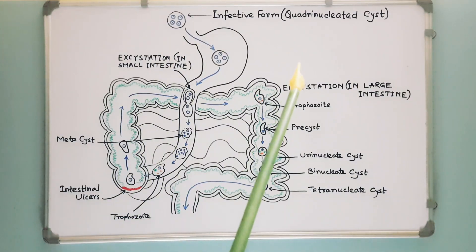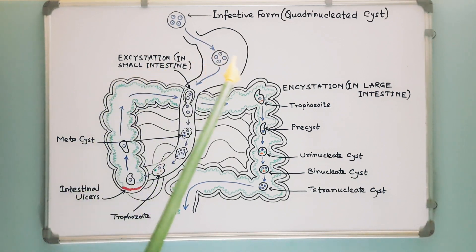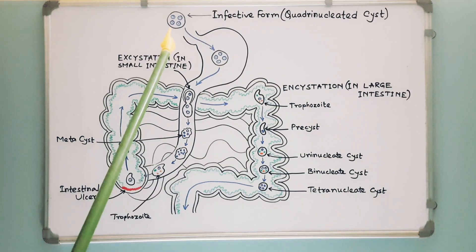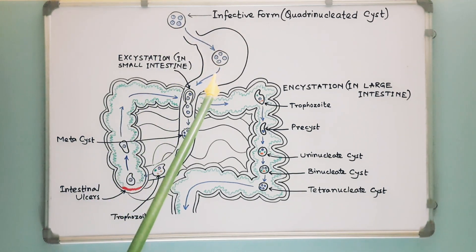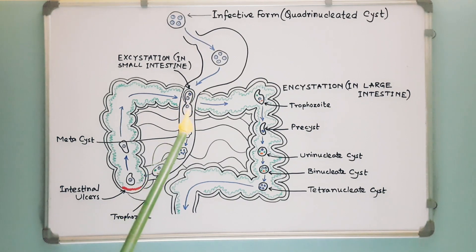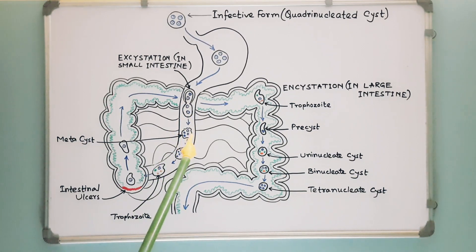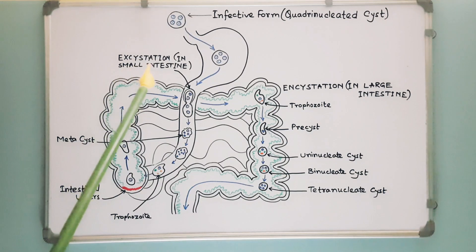Here I have tried to explain the life cycle of Entamoeba histolytica. After swallowing food contaminated with Entamoeba cysts, in the small intestine the cyst wall gets sliced by trypsin and a single tetranucleated trophozoite, or metacyst, is liberated. This process is known as excystation.